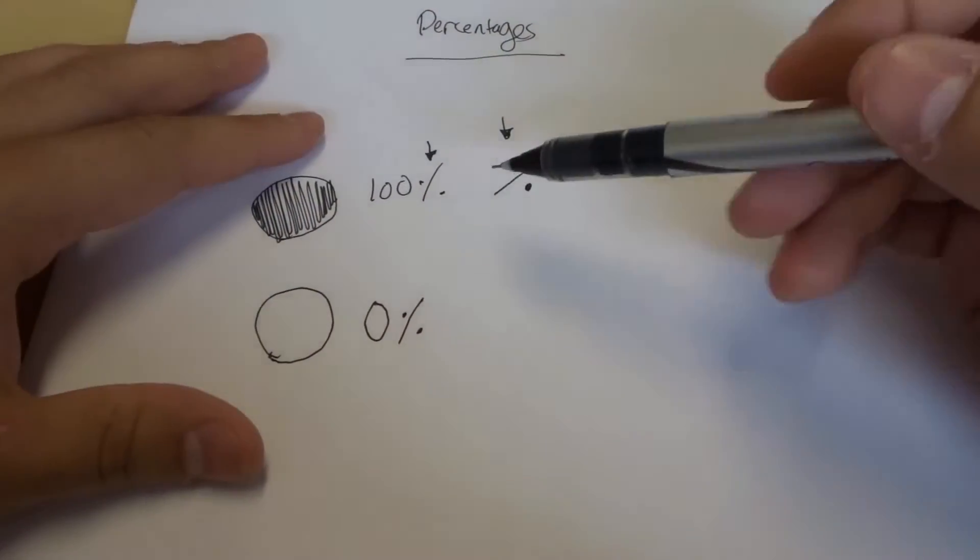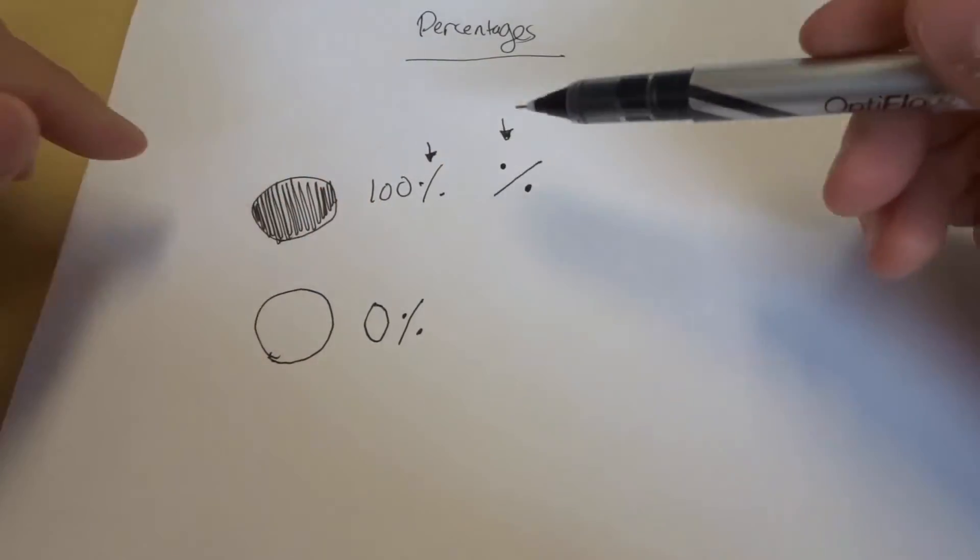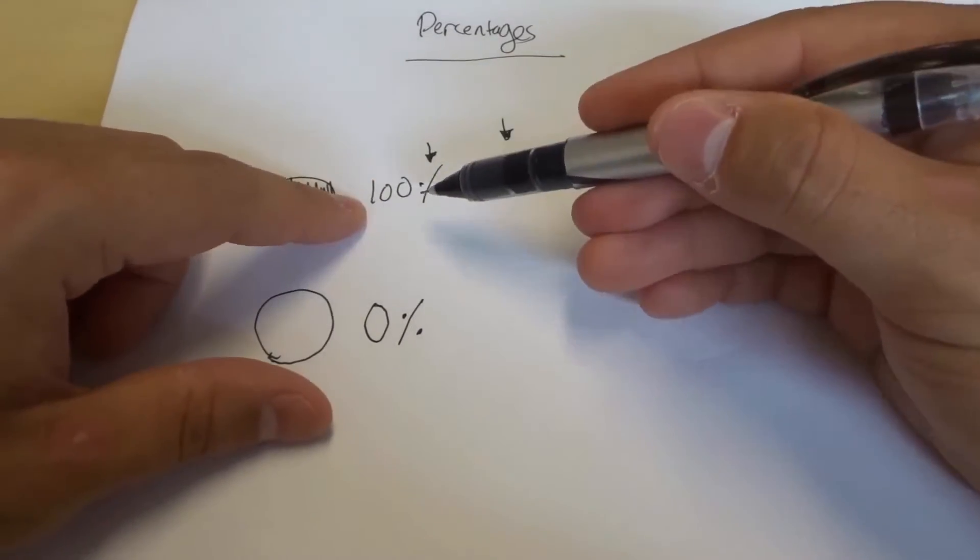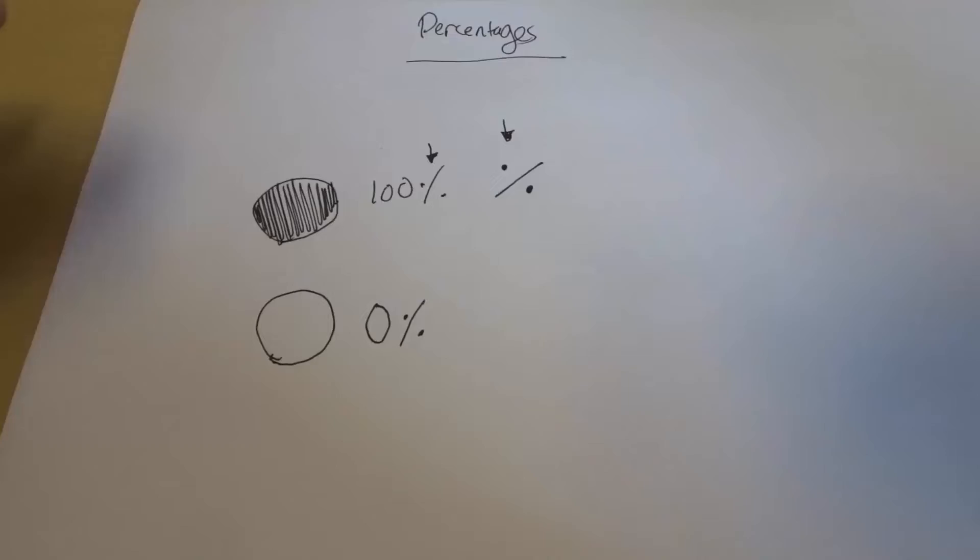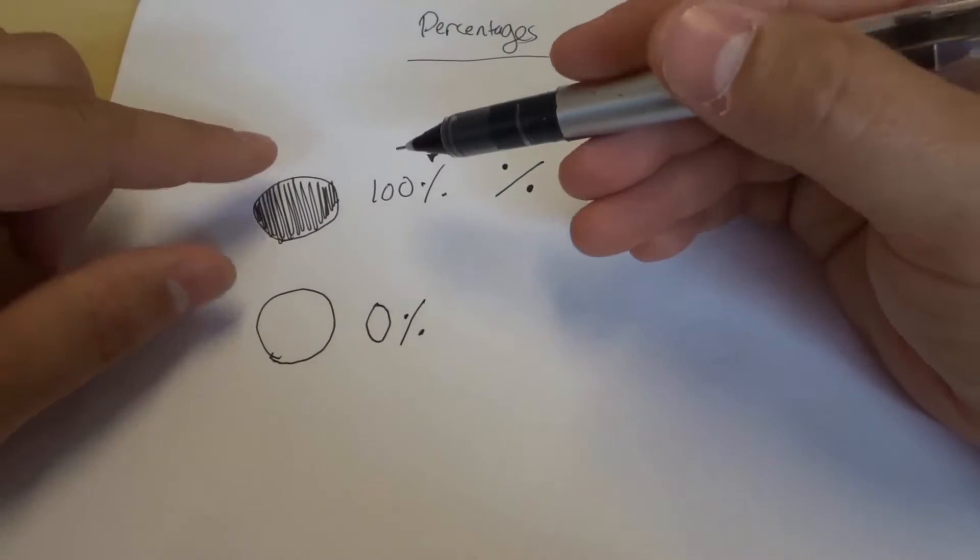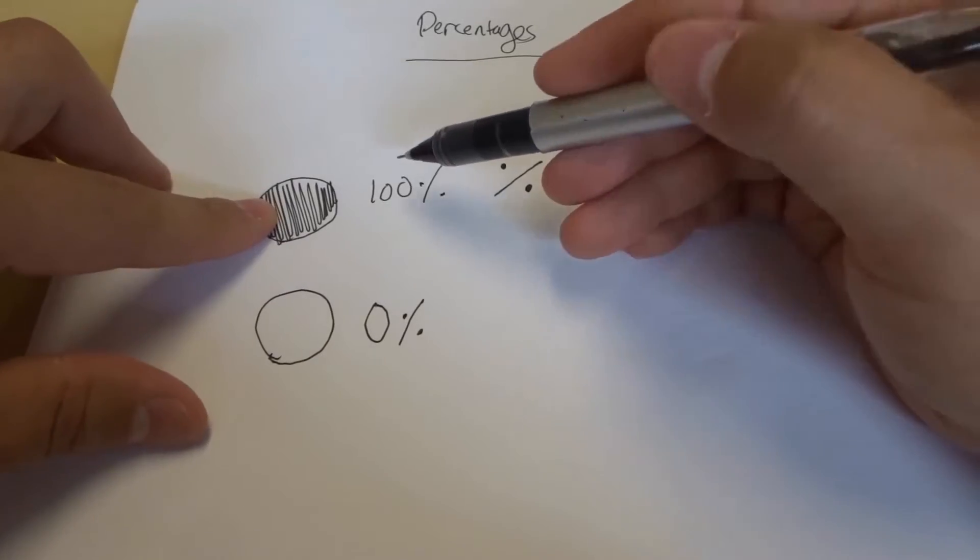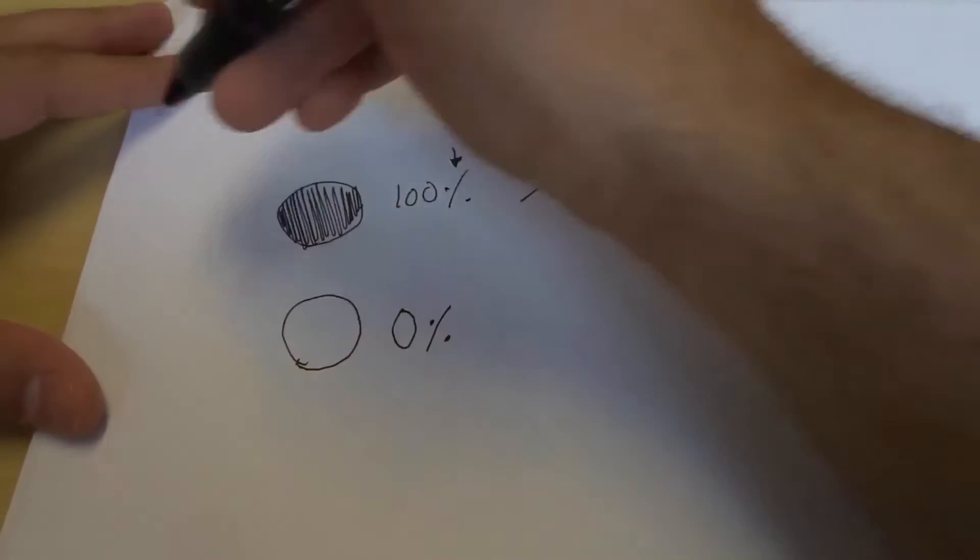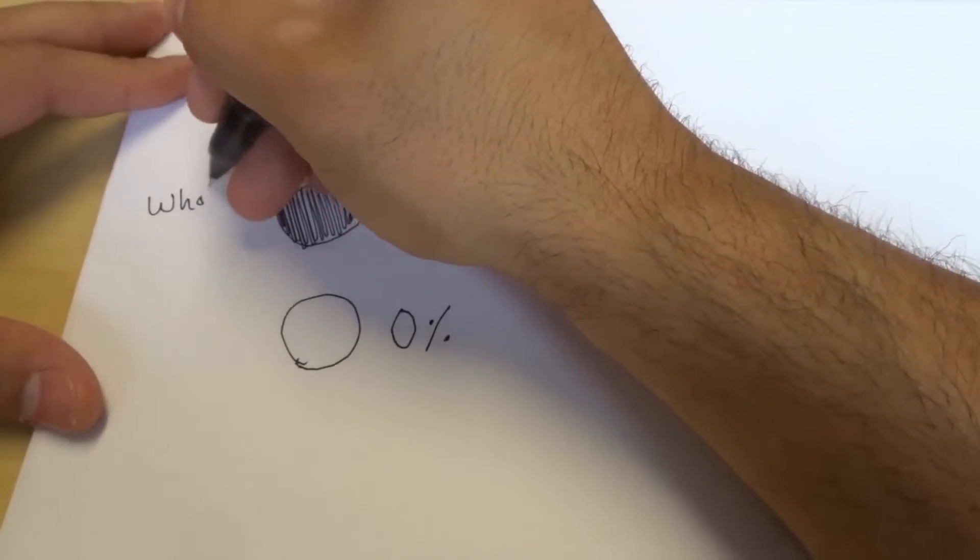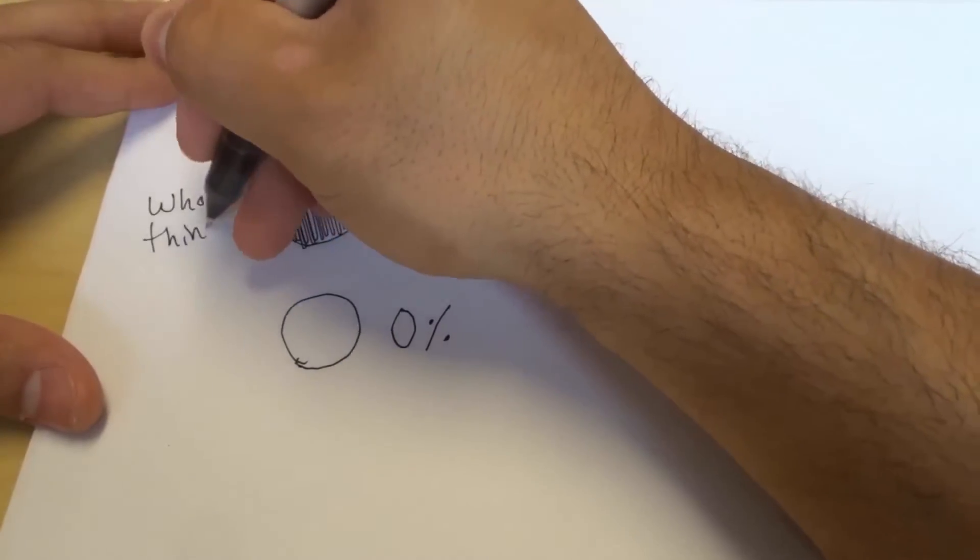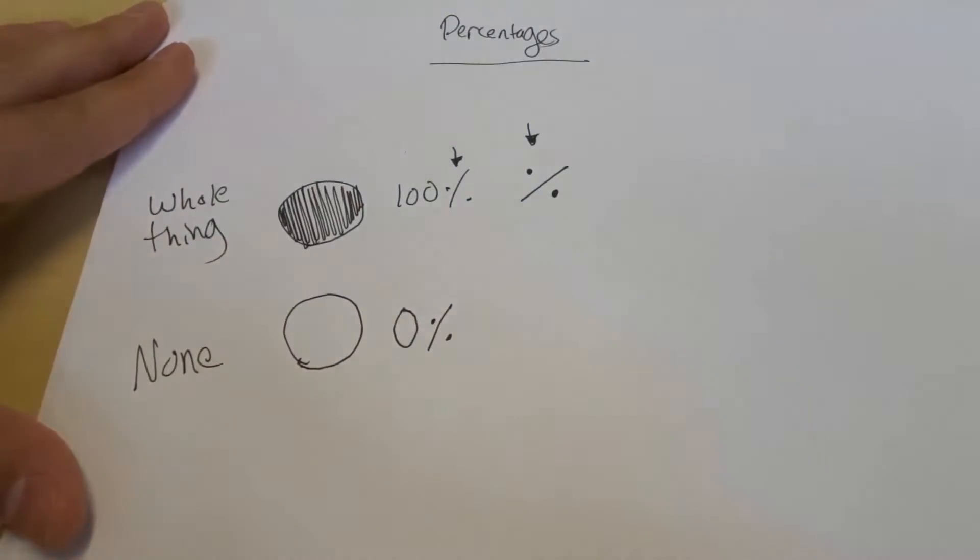Now there are a whole bunch of numbers and values of percentages in between 0 and 100 that I'm going to go over as well. But you need to understand first and foremost that a percentage is basically just an amount of a whole that you have. If you have the whole thing, it's 100%. So 100% is the whole thing, and 0% is actually none.